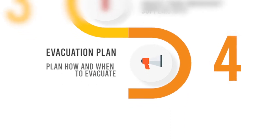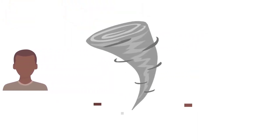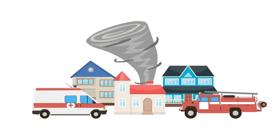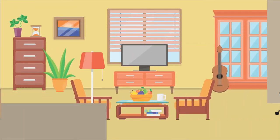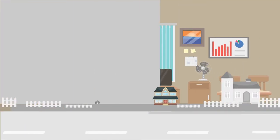Step 4: How and when to evacuate. You don't need to evacuate in all emergencies — just make sure you know when to evacuate. Usually a city, county, or first responder will let you know. If it looks dangerous though, use your best judgment. Be familiar with all possible routes out of your home or office and out of your neighborhood as soon as possible.